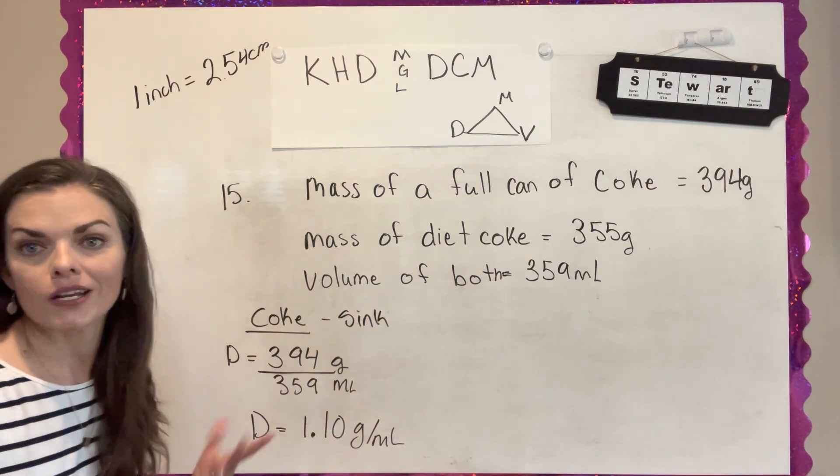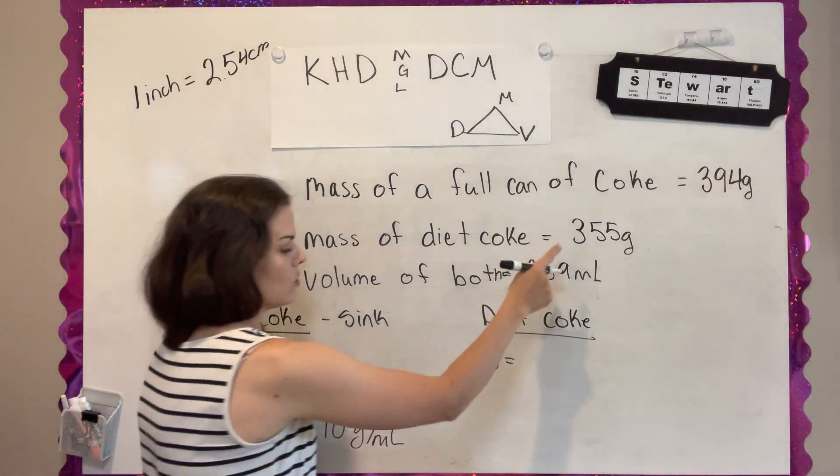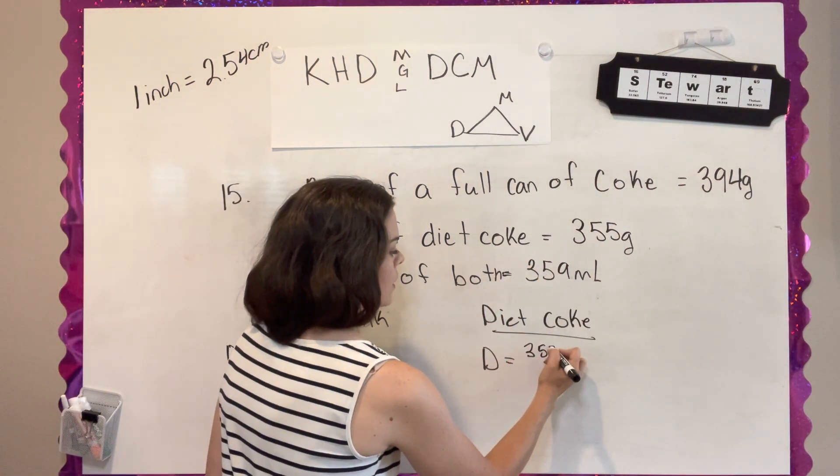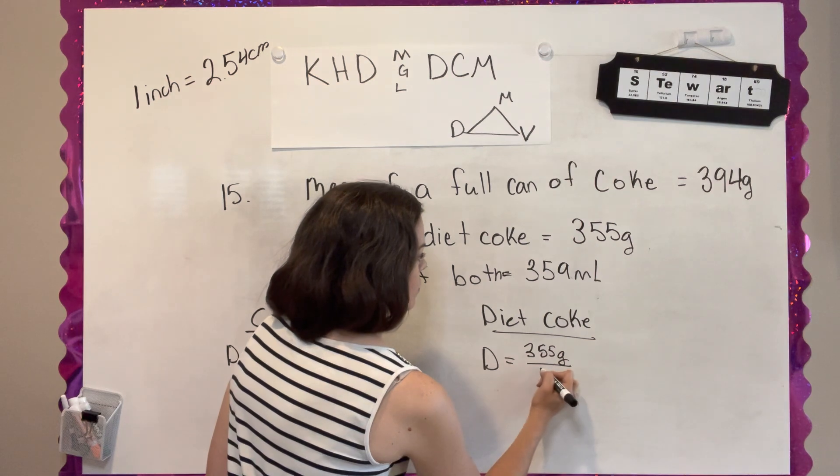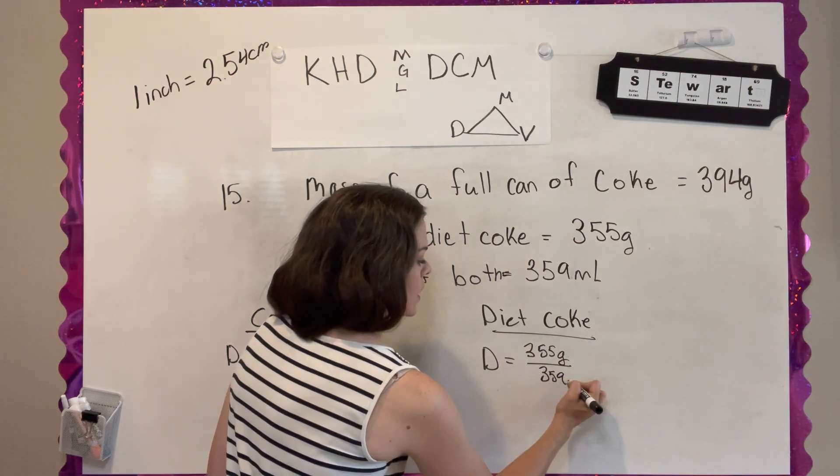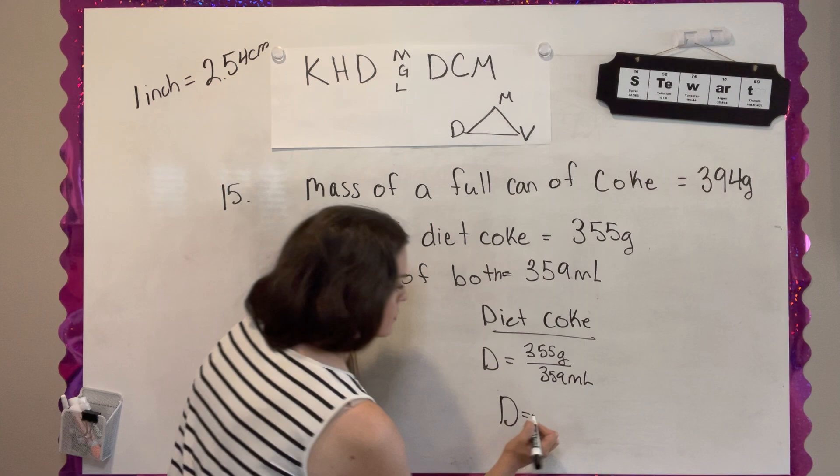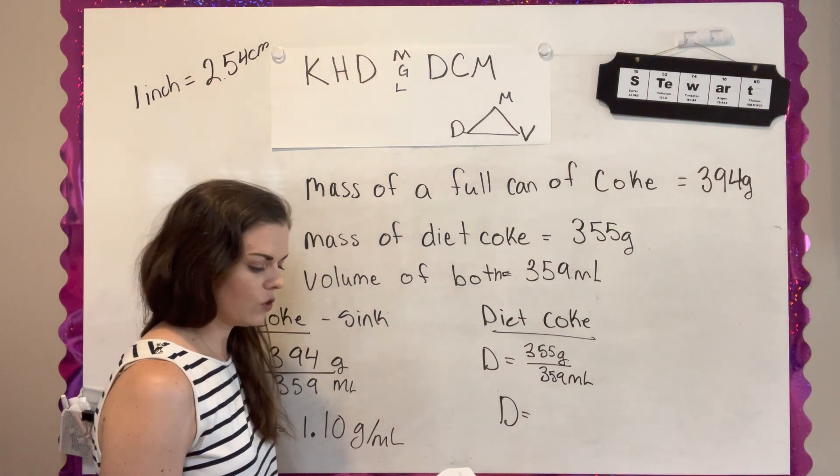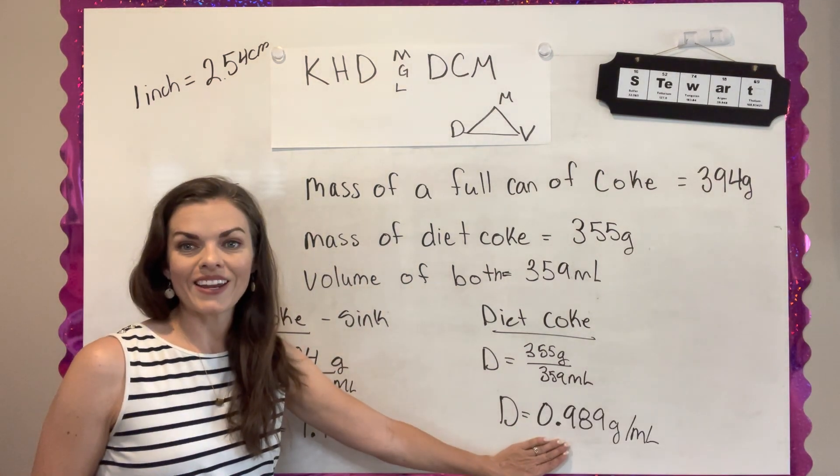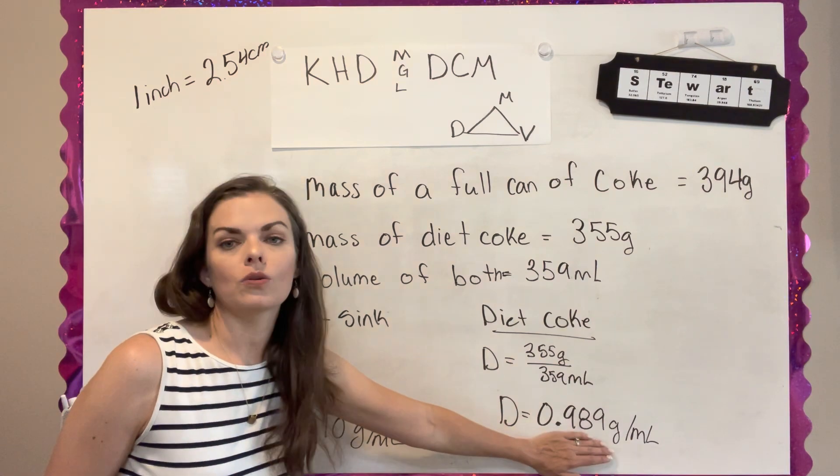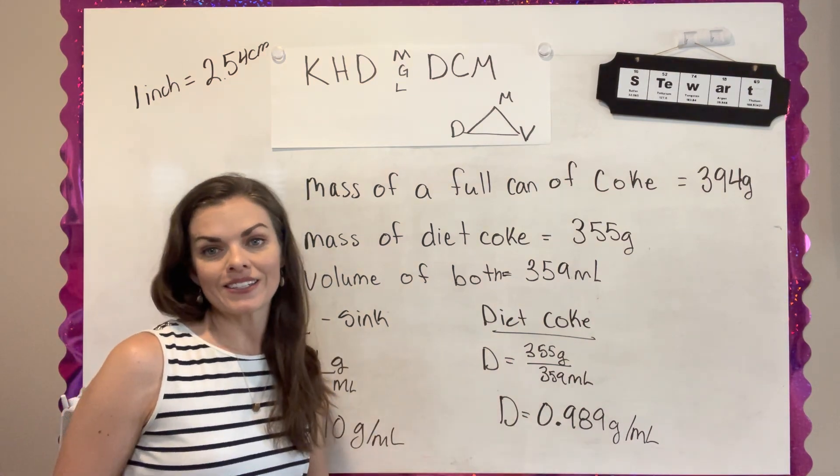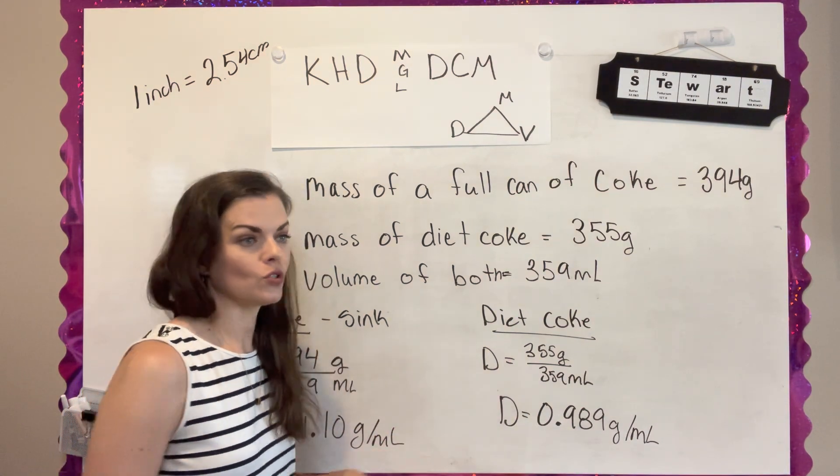So now let's try diet Coke. So diet Coke is 355 grams over 359 milliliters. And still with three significant figures, you get 0.989 grams per milliliter. So this is less than one, less than the density of water. So this one should float.